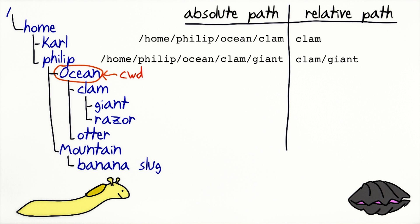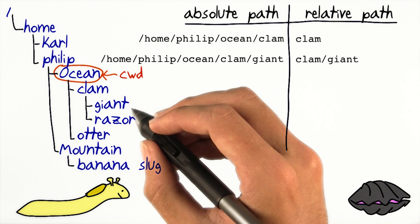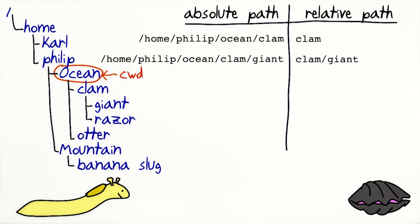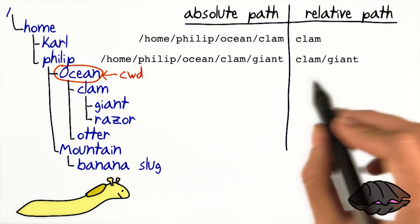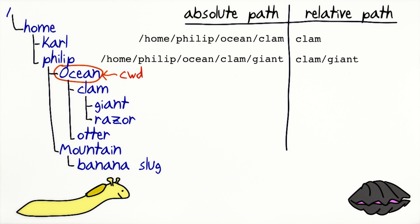You can also write relative paths for files in other directories. For example, the relative path of the giant file in the clam directory is just clam slash giant. Notice that unlike a full path, the relative path does not start with a slash. That's how you can tell a relative path from an absolute one.